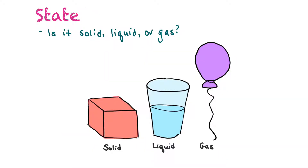We can also describe matter's physical properties by its state — whether it's solid, liquid, or gas. Solids have a distinct shape. Liquids have a distinct volume and fill a container, taking the shape of that container. Gases fill the whole container and don't have a distinct shape — their particles are spread far apart, bouncing around everywhere.